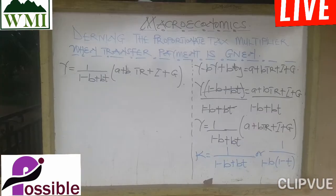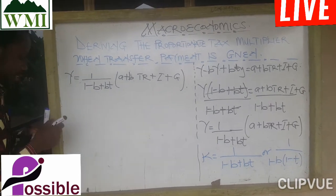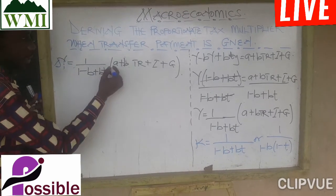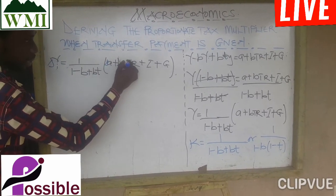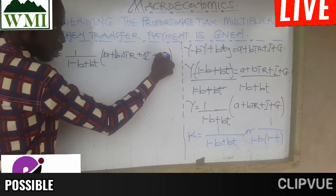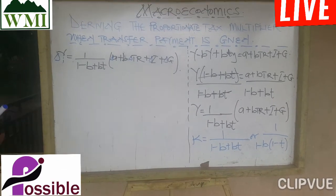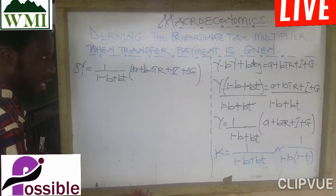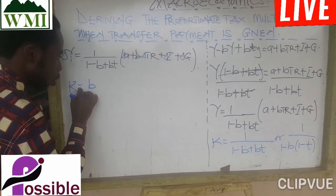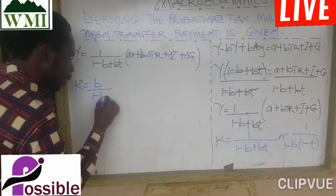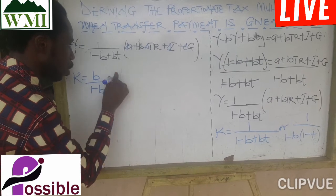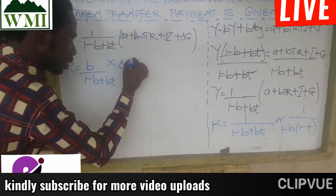The multiplier tells us the change. So we find the change for each component. The transfer payment multiplier is: K equals B over (1 minus B plus BT) times the change in TR. This gives us the transfer payment multiplier.